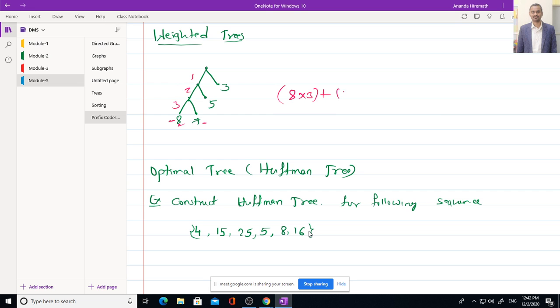7 is at level again 3, 1, 2, 3. So 7 into 3 plus. One more leaf is 5 and its level is 2, 1, 2. So it will be multiplied by 2. Similarly, for 3, 3 should be multiplied by 1 because its level is first, it is at level 1.